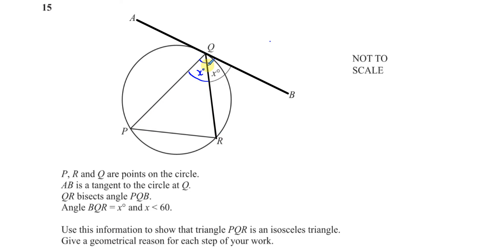That's why it's called the alternate segment theorem — it's in the other segment from where this angle is. This chord cuts the circle into two segments. The angle QPR stands on the same chord QR, which the angle X is made with the tangent. That angle has to be the same as the angle made between the tangent and the chord. So this angle is X, and this angle is X because the angle has been bisected. Therefore, this must be an isosceles triangle.